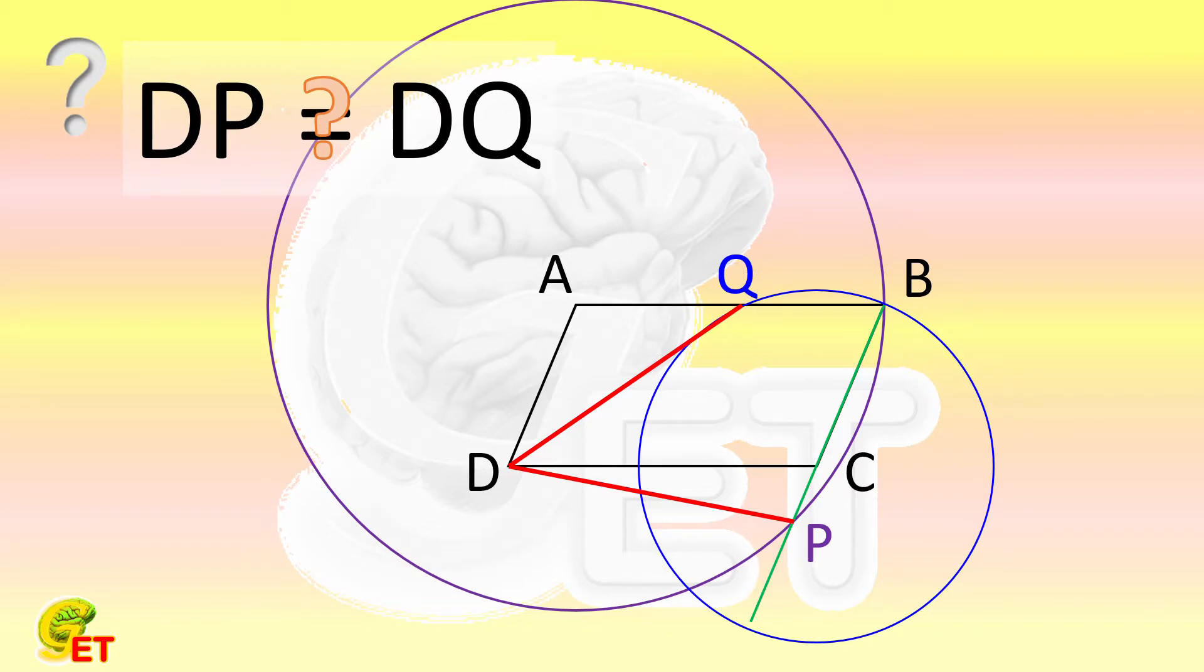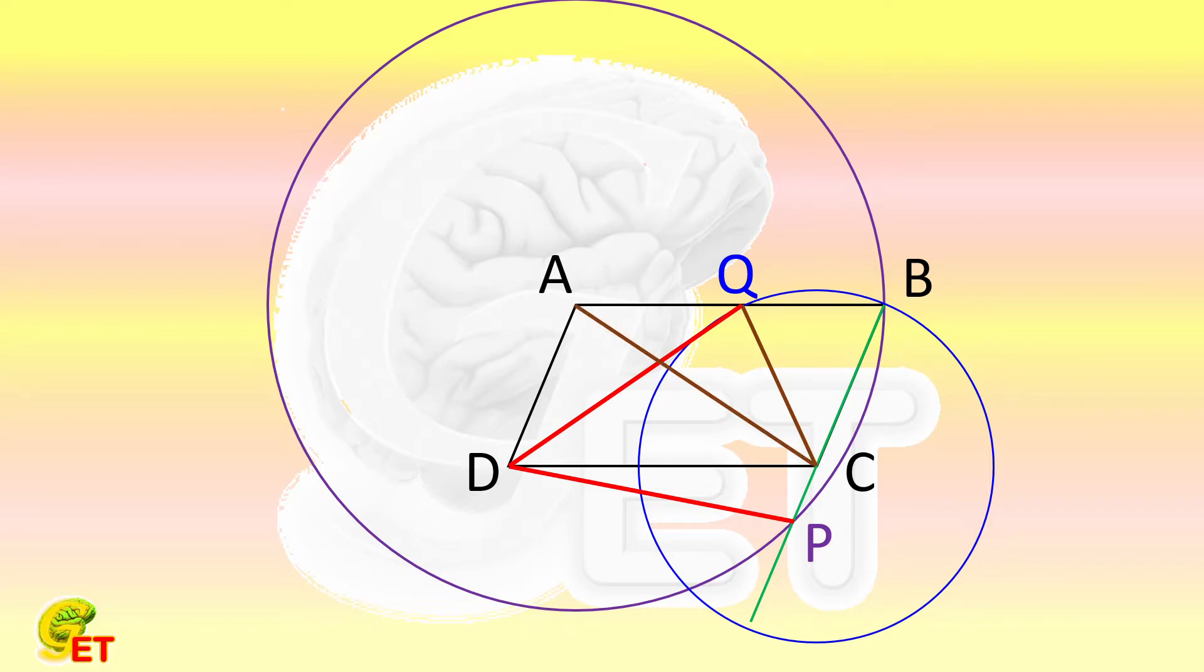We first connect points C and Q, points C and A, respectively, and then extend BA, which crosses circle A at point K.